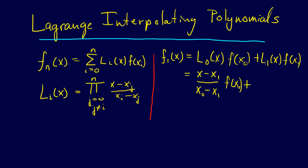And then we have plus this L1 of x. What's L1 of x? L1 of x is the sum from j equals 0. j and i are not equal, so that's good. So we're just going to start with i equals 1 and j equals 0.